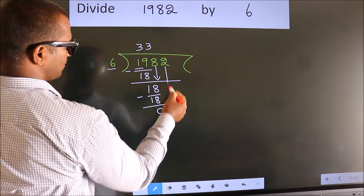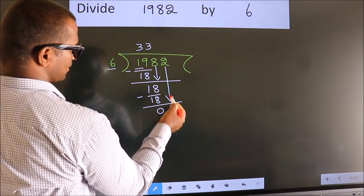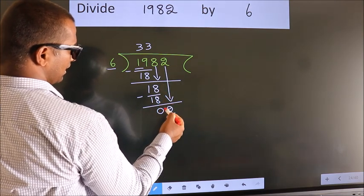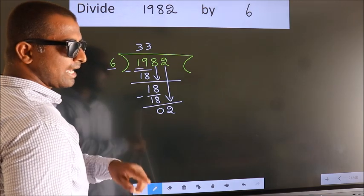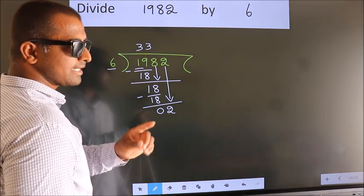After this, bring down the beside number. So 2 down. After this step, the mistake happens.